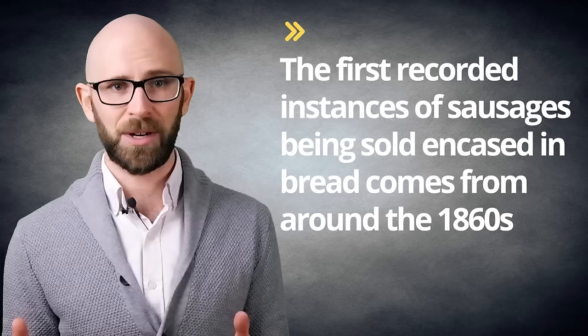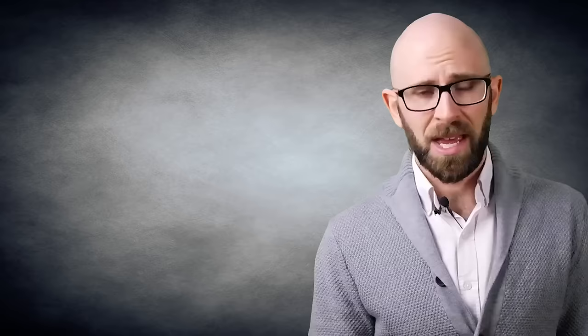While it is unlikely that the practice of putting sausages in some sort of bread only happened recently, bread being a staple food throughout history and sausages being relatively popular in many cultures, the first recorded instances of sausages being sold encased in bread comes from around the 1860s, where various German immigrants sold Frankfurters with milk rolls and sauerkraut on the streets of New York City. There are numerous stories of people having claimed to be the first to put the sausage in a bun, but nobody knows for sure which, if any, are true. A common theme among all of these stories is that the idea behind the bun was to be able to serve the hot dogs to customers on the streets without the customers burning their hands on the hot sausages.